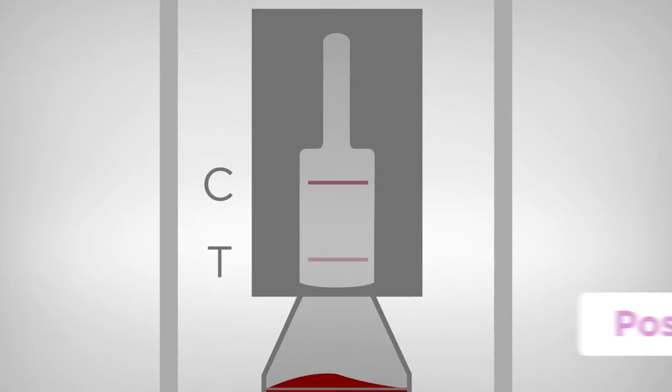A band of any signal intensity appearing at the test position T is considered positive for troponin I. If no band appears in the T position, it is considered a negative result.